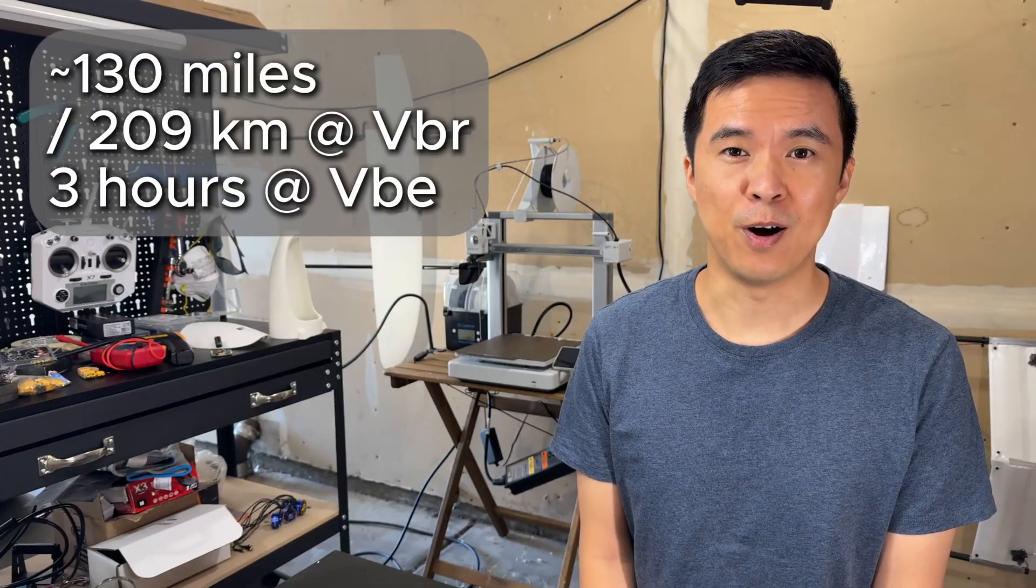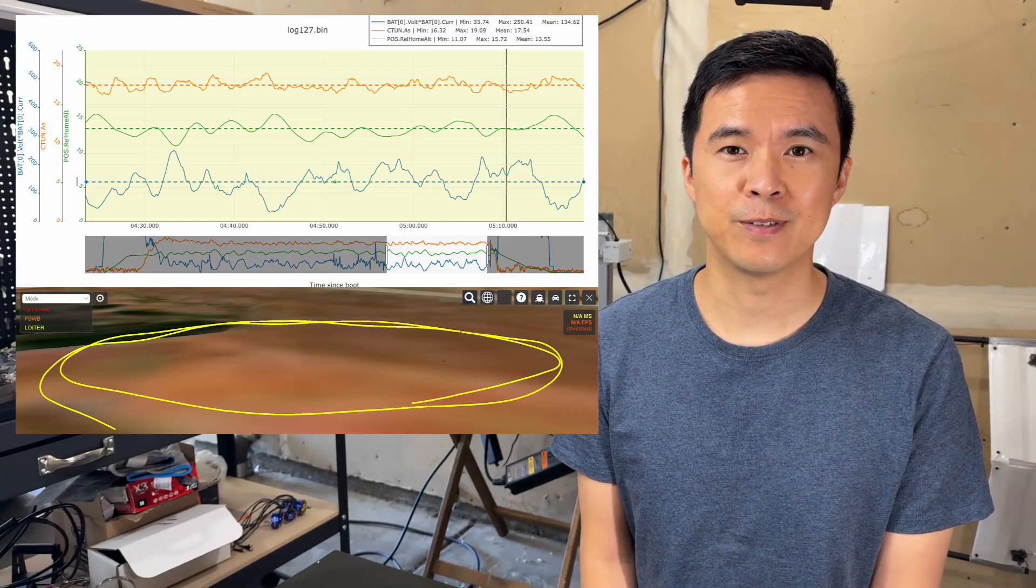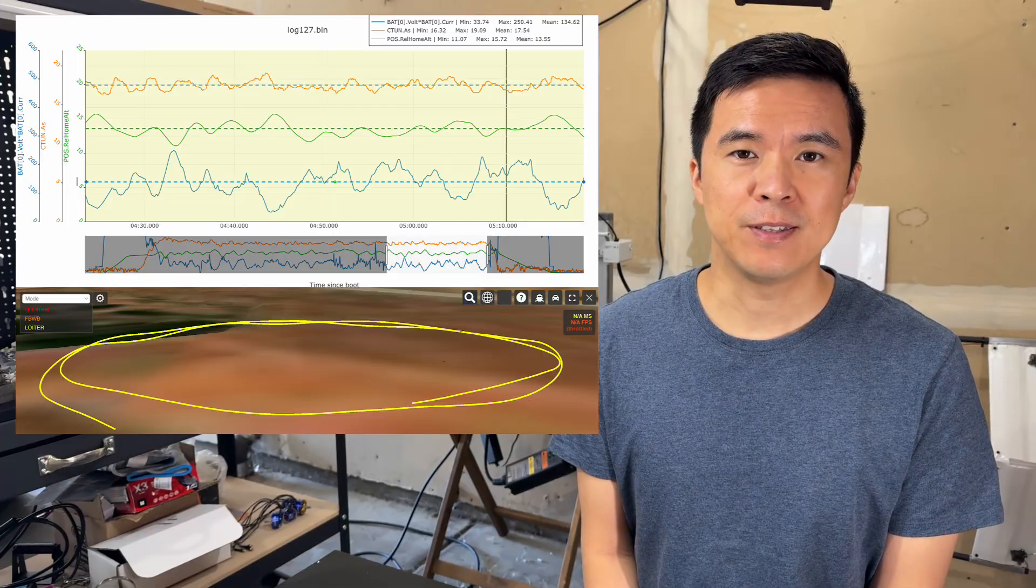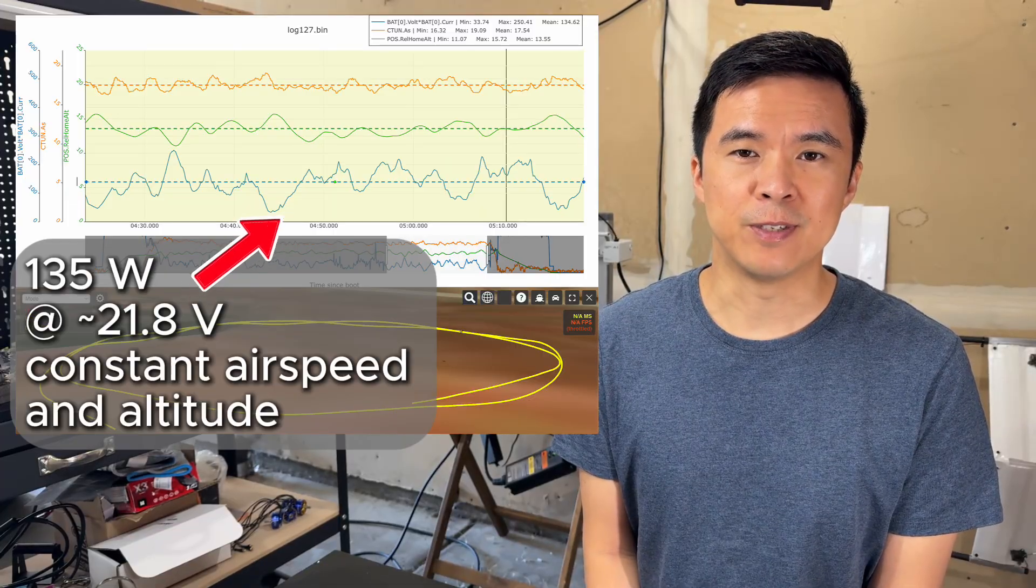One more thing. My flight testing shows my VTOL could fly for about 130 miles or 3 hours. Even unoptimized, this would be one of the longest range 3D printed VTOLs ever made. How did I achieve this with almost no experience?